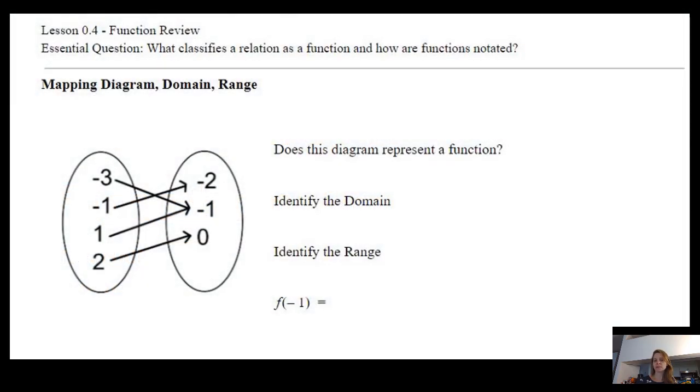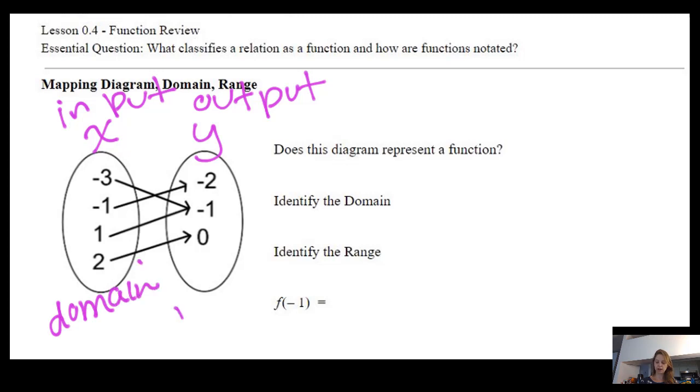We begin with mapping diagrams. Below, I have a mapping diagram, which is two circles that map inputs to outputs. I'm going to label these X to Y, also input to output, and we could also label this domain and range.